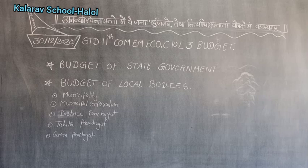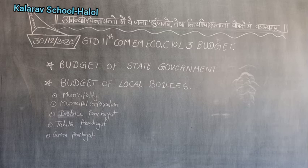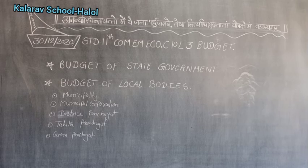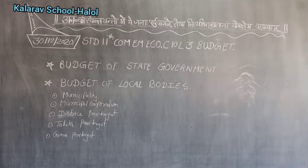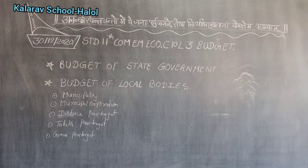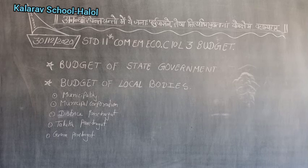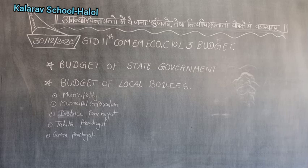Budgetary deficit: when total income is less than expenditure, including the borrowing from the market which is considered as income from debt created. Hence market borrowings are added to the deficit to get the fiscal deficit. Fiscal deficit equals total income excluding market borrowing.